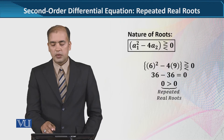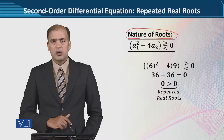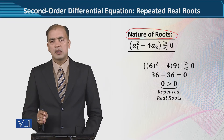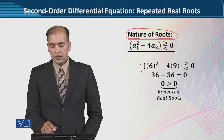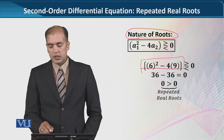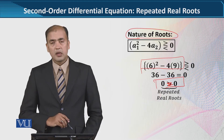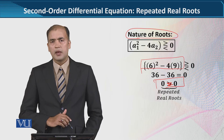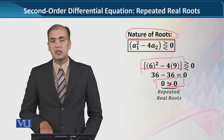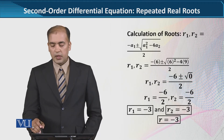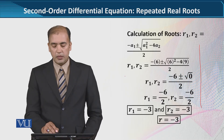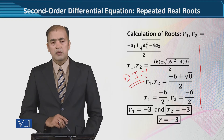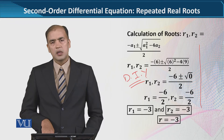جب ہم نے یہ values نکال لیں، we are in a position to judge the nature of roots۔ اس کے لیے ہم discriminant کی value دیکھتے ہیں - اس case میں ہم چاہتے ہیں کہ it should be equal to zero تاکہ repeated real root case develop ہو۔ ہم نے a1 اور a2 کی values لگائیں اور answer میں zero آیا، which means repeated real roots ہیں۔ R1 اور R2 دونوں کی value minus 3 ہے، اس لیے ہم r بھی کہہ سکتے ہیں۔